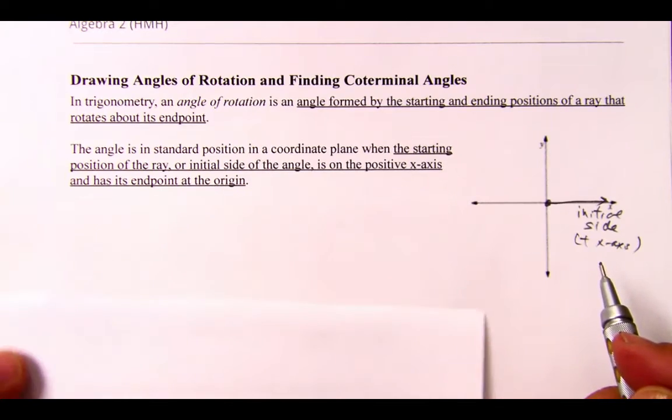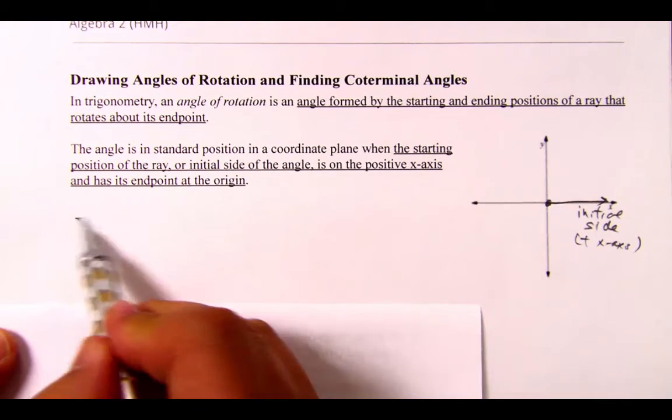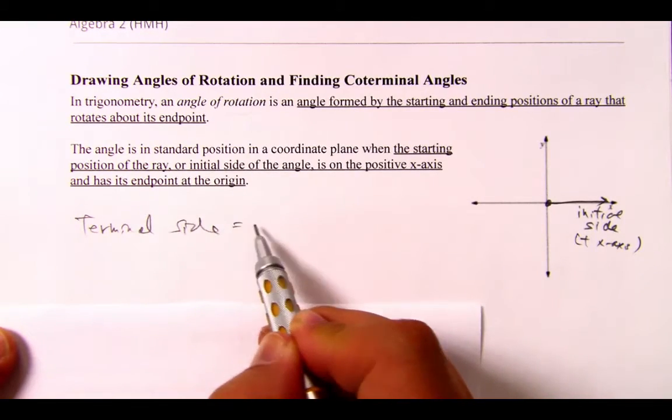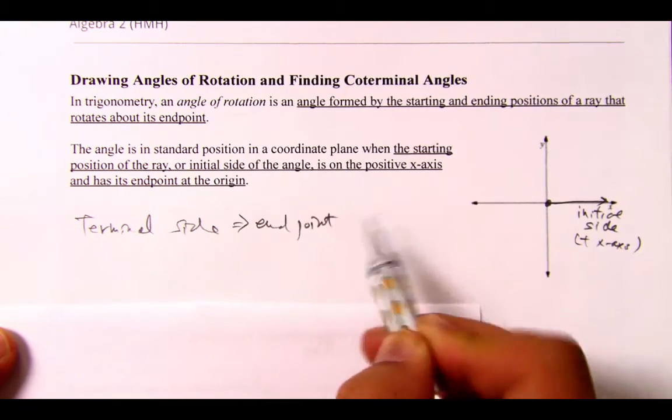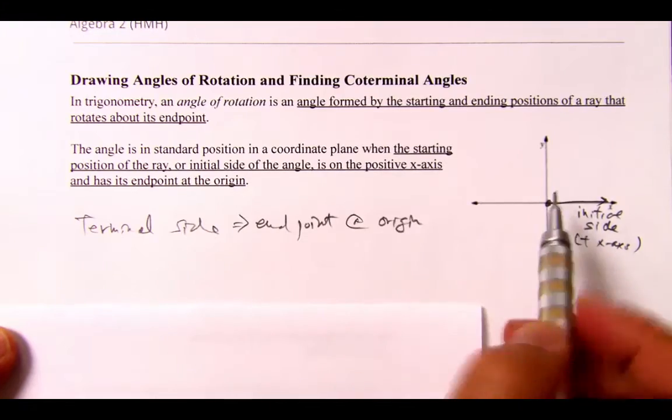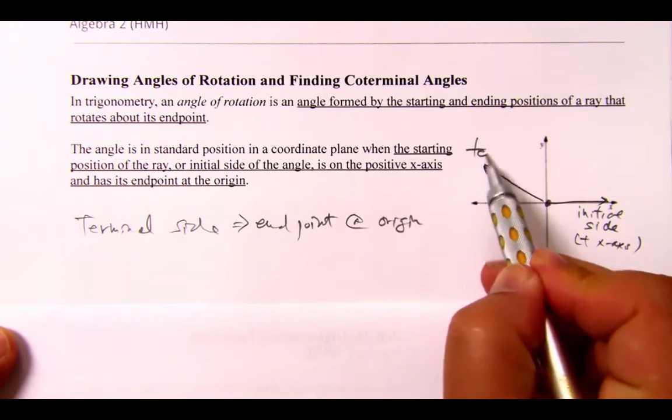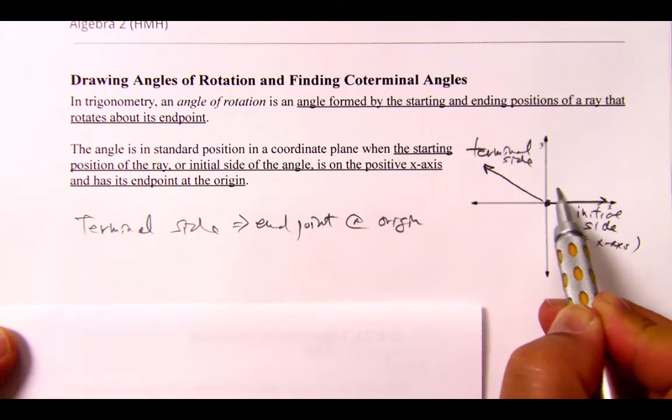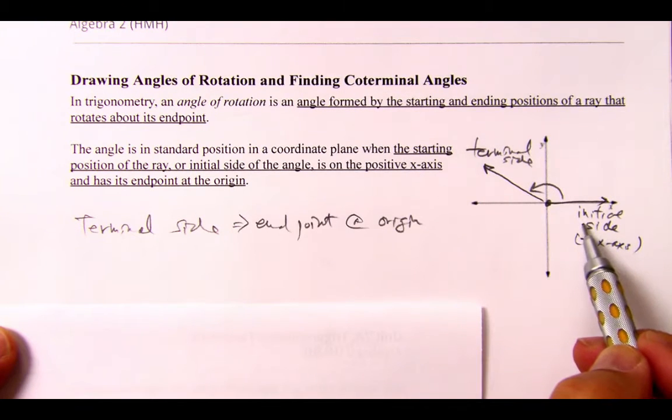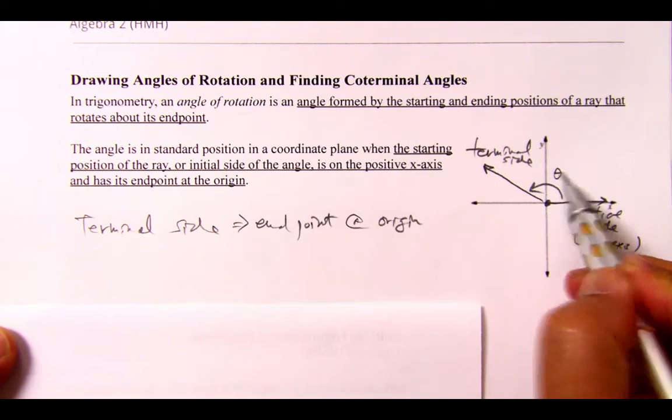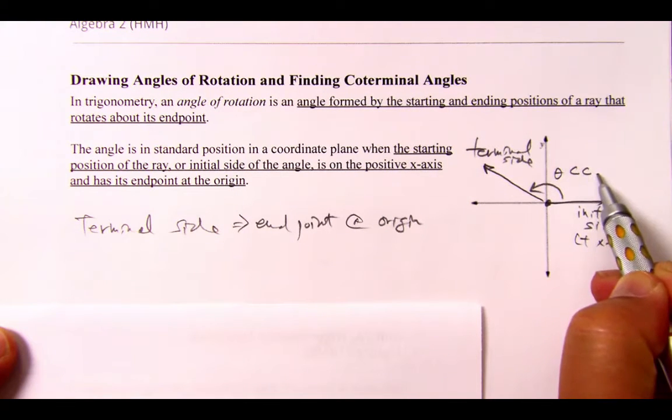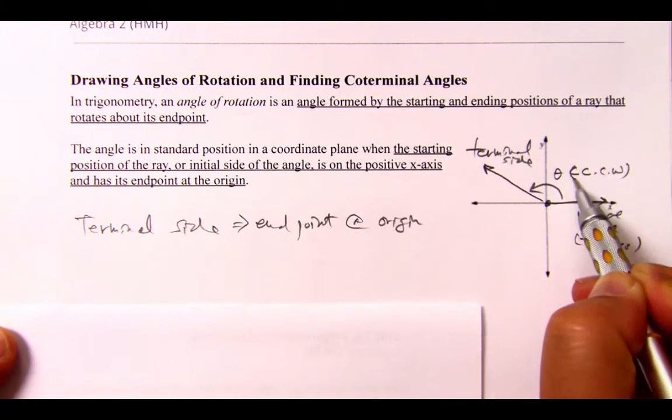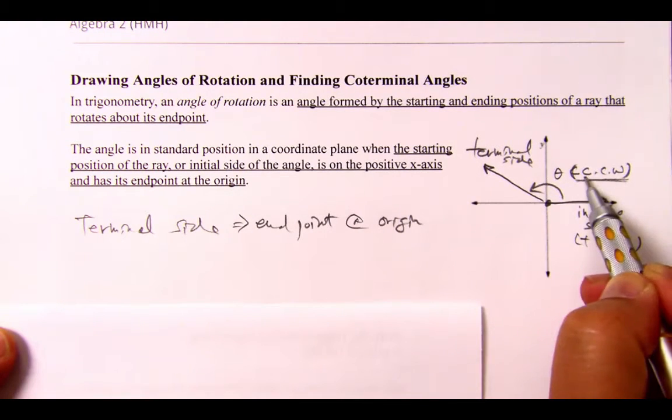And you have a terminal side. Its endpoint is also at the origin. So let's say this is the terminal side. And then when you measure counter-clockwise from the initial to the terminal side, that's the angle that we're measuring.